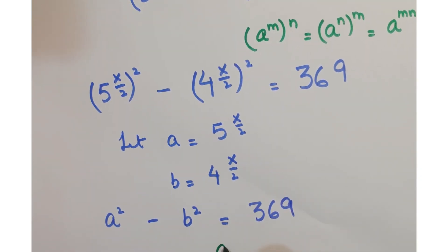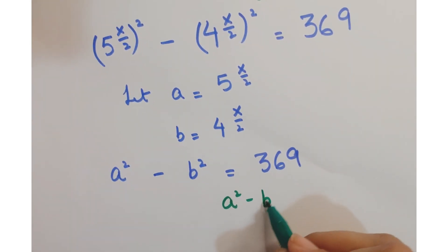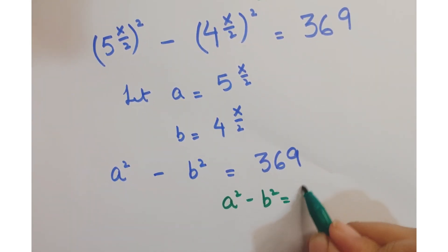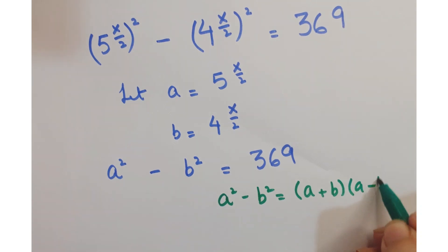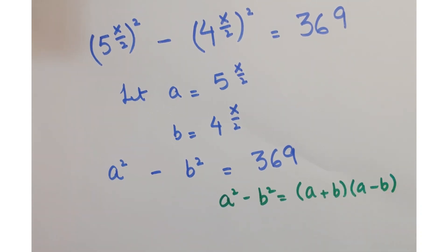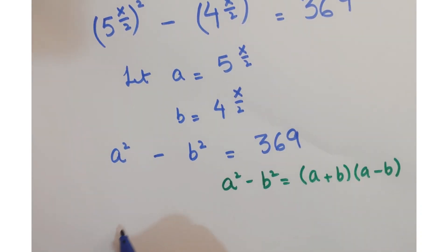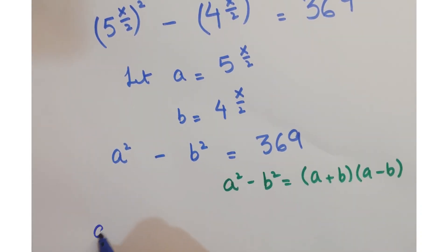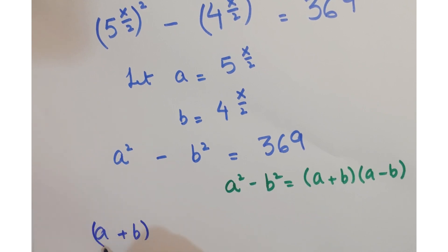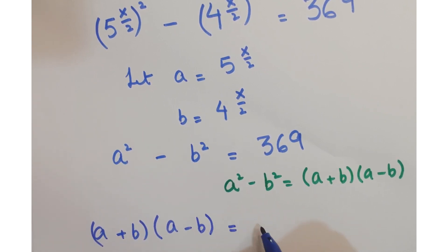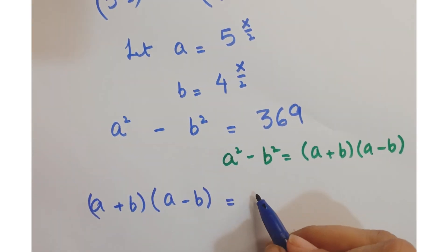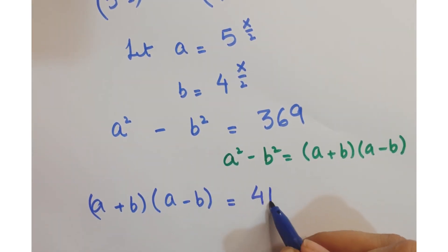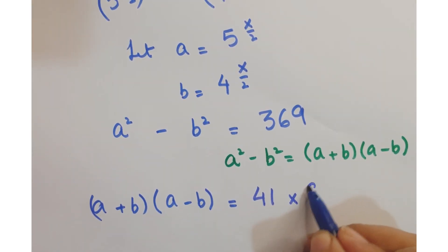Now, a squared minus b squared equals a plus b into a minus b. This is an algebraic identity. So replacing it, you get a plus b into a minus b equals 369, and 369 can be factorized as 41 into 9.